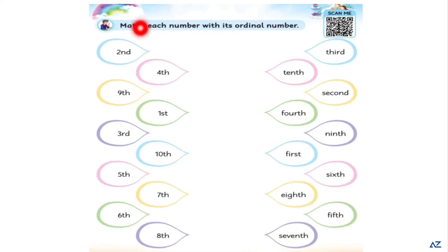Now match each number with its ordinal number. Like this is 2nd and match it with its number 2nd. 4th, match it with 4th. 9th, match it with 9th. 1st, match it with here. 3rd, match it with here. 10th, match it with here. 5th, match it with here. 7th, match it with here on the last 7th. 6th, match it here. And number 8th, match it here.